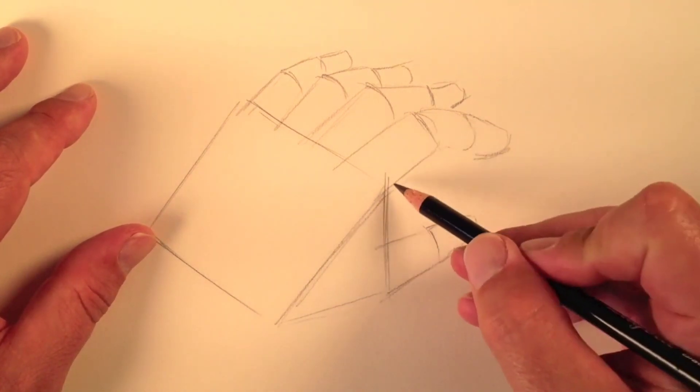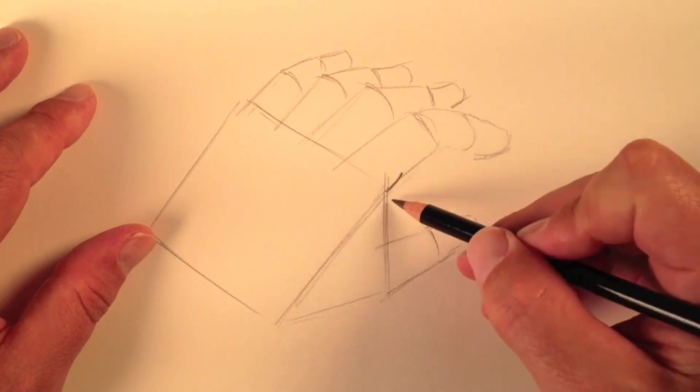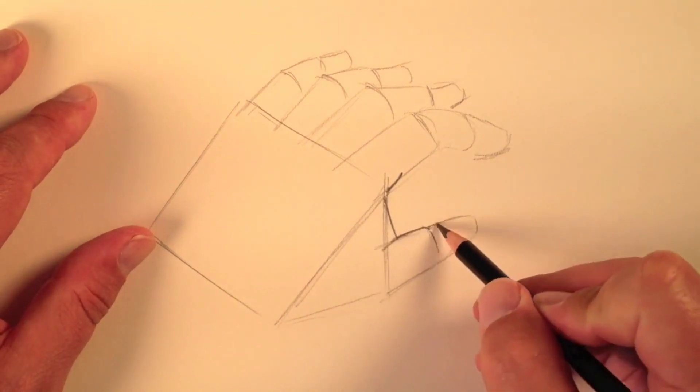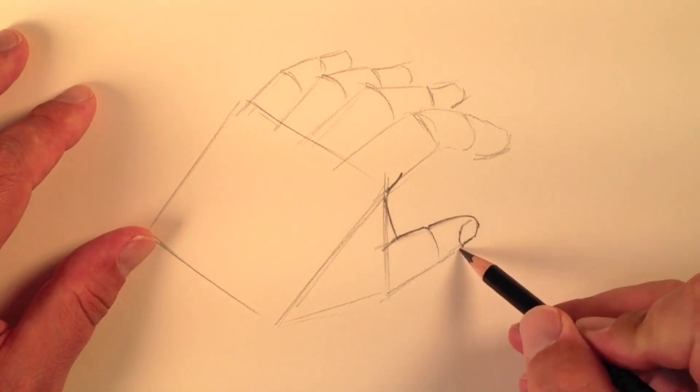Now that we've got our structure defined, we can go back and add our contour lines. This time, again, with a lot of confidence, because we know that the structure we've built with shapes is accurate.